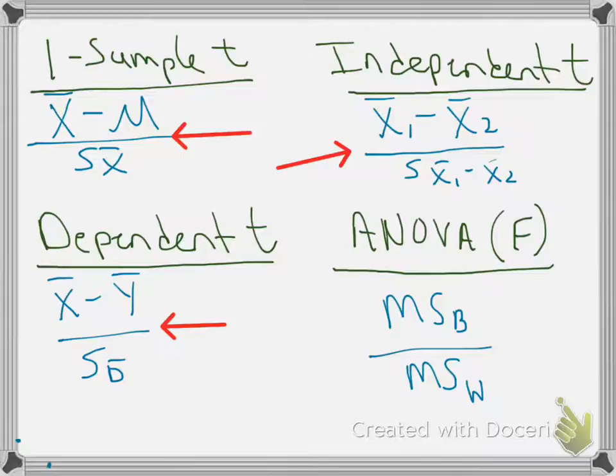Is the observed difference — what I see as the difference between my sample means — big or small compared to the expected difference that I would get between my means just due to random sampling?